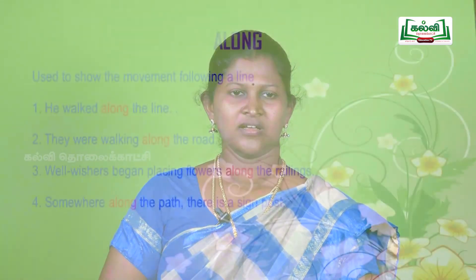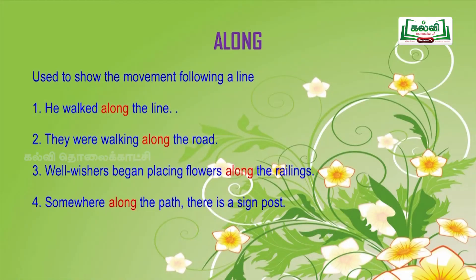Another preposition is along. It is used to show movement following a line. Examples: 'She walked along the line.' 'They were walking along the road.' 'Well-wishers began placing flowers along the railings.' 'Somewhere along the path, there is a signpost.'